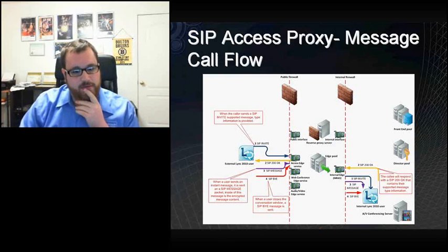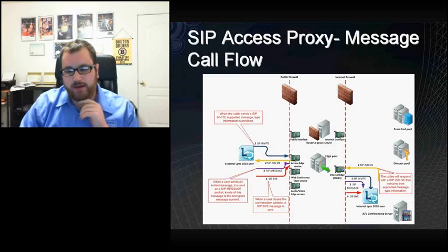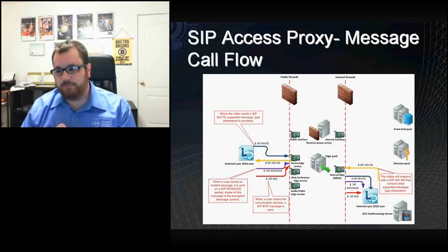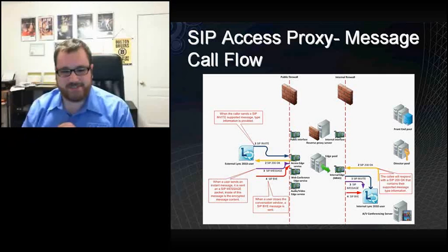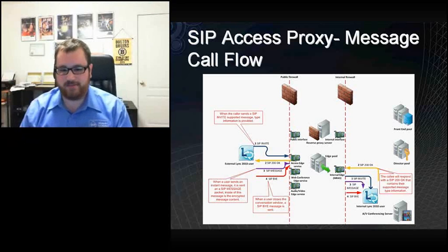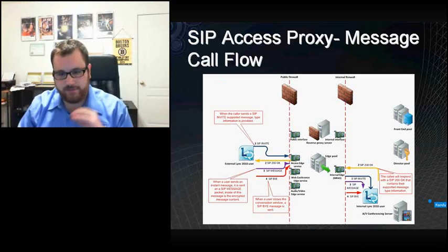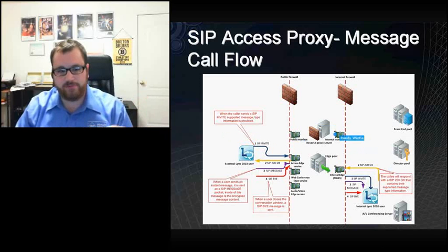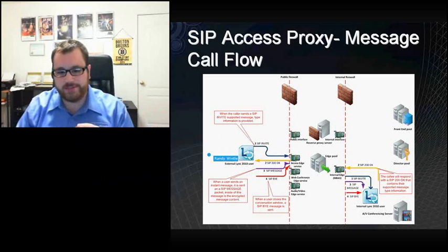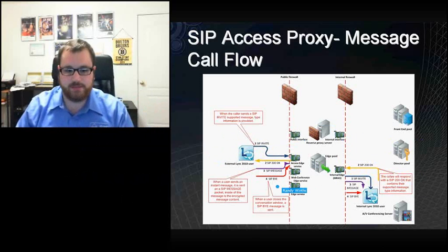This diagram from the Resource Kit chapter shows what happens with an external and internal user — it's a pretty basic exchange. There are SIP invites, SIP 200 OKs, SIP messages, and SIP BYEs. This is the most simple exchange of communications you can have between users: one user sends an invite, the other sends a 200 OK, they start sending messages, and then somebody closes the window — that's a SIP BYE message.